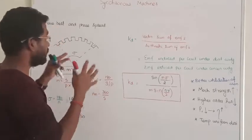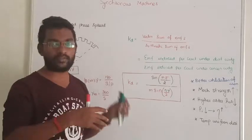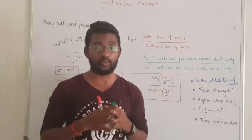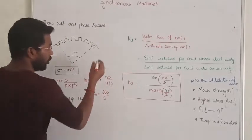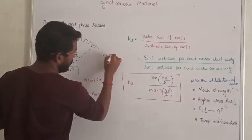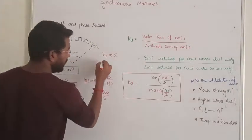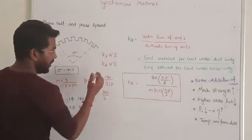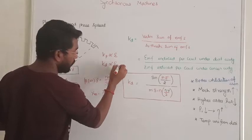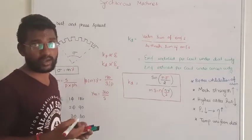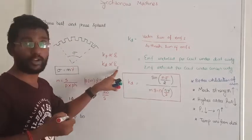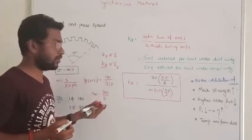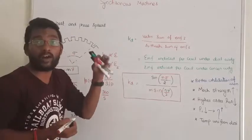Next, we are going to discuss about distribution factor. In the last section I talked about pitch factor. Pitch factor is directly proportional to induced EMF. Distribution factor will also be directly proportional to induced EMF. The difference between 5th order harmonics or 7th order harmonics — that effect we can reduce by using the distribution factor. We can reduce the effect of higher order harmonics.